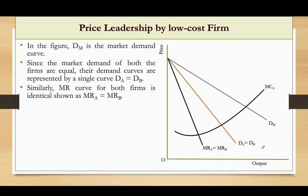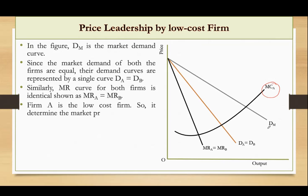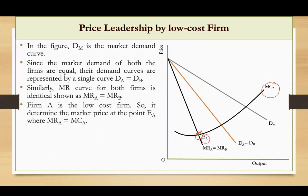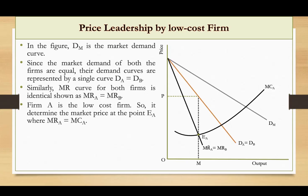The price leader is the low cost firm. MCA is the marginal cost curve of firm A, and EA is the point where marginal revenue equals marginal cost — the point of equilibrium for firm A. At this equilibrium point, OM is the equilibrium quantity and OP is the equilibrium price. This is how price is determined in this price leadership model.